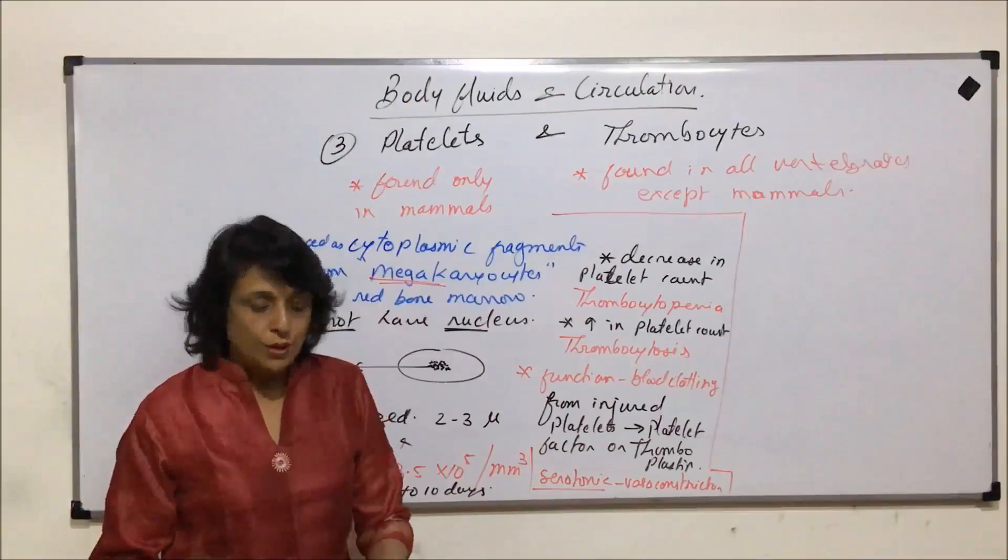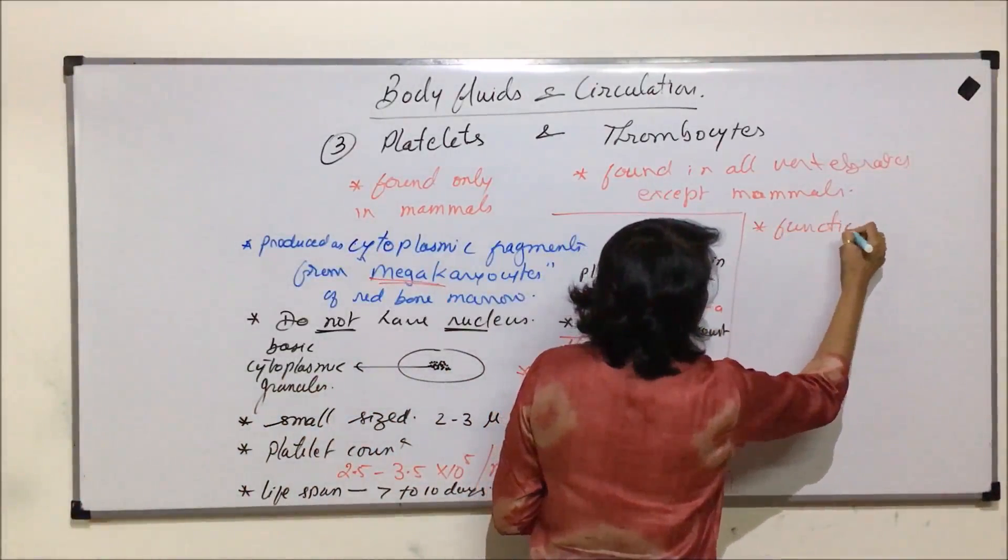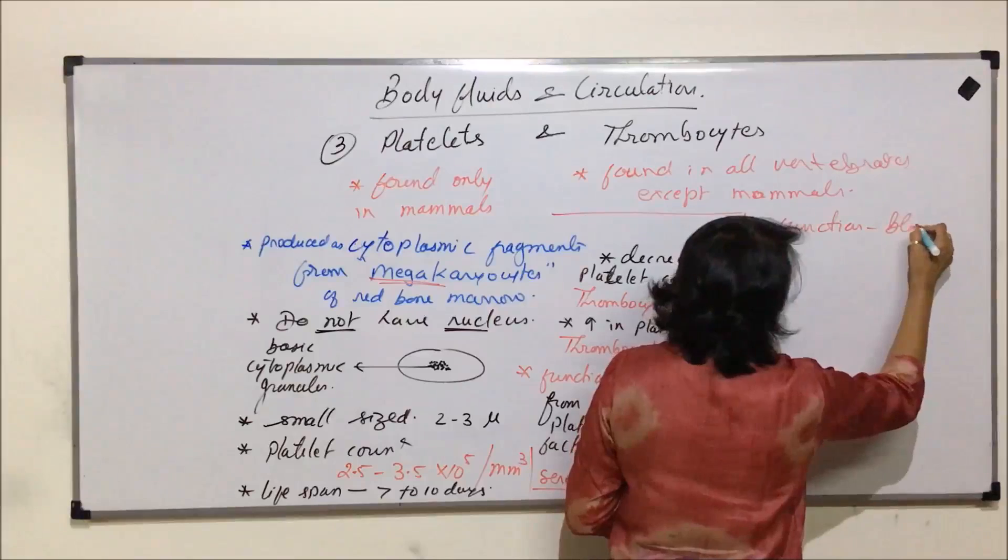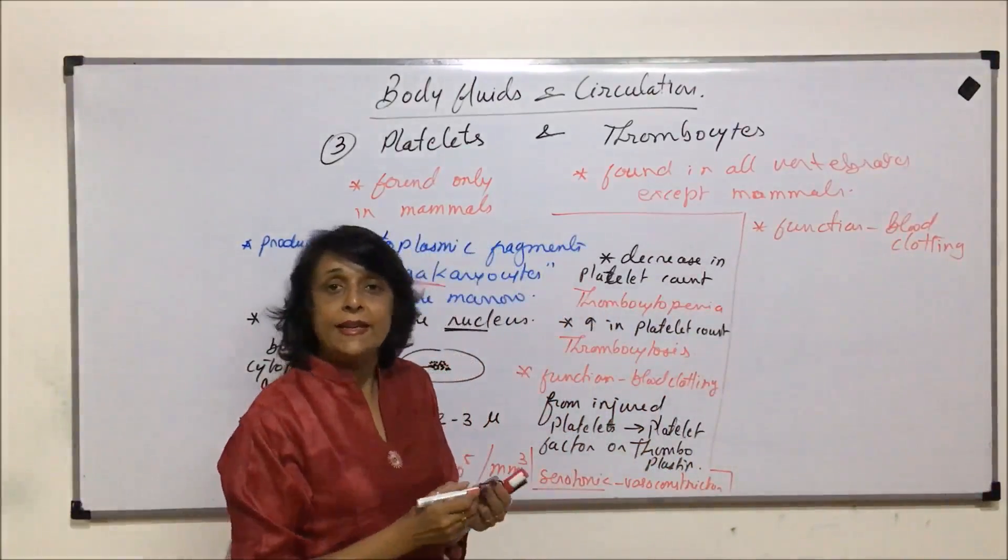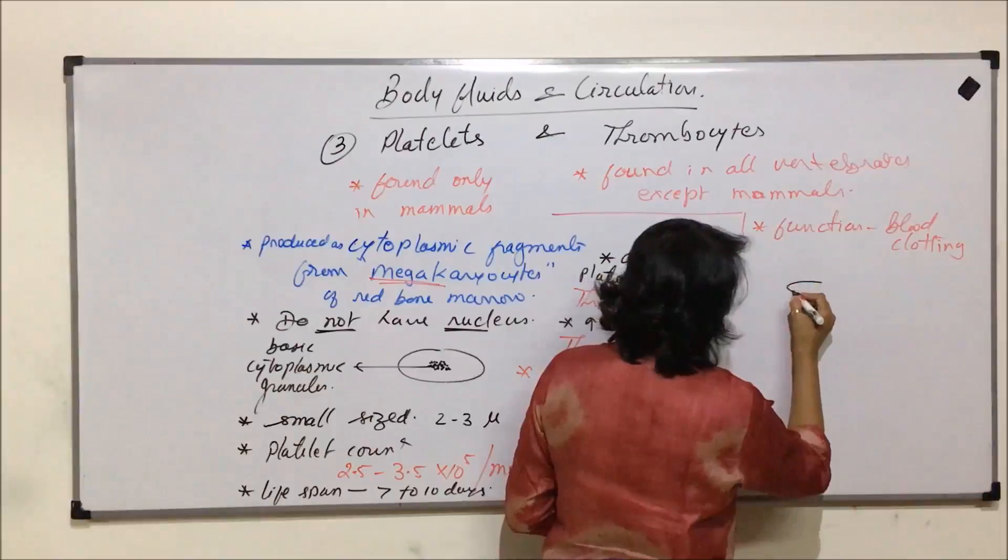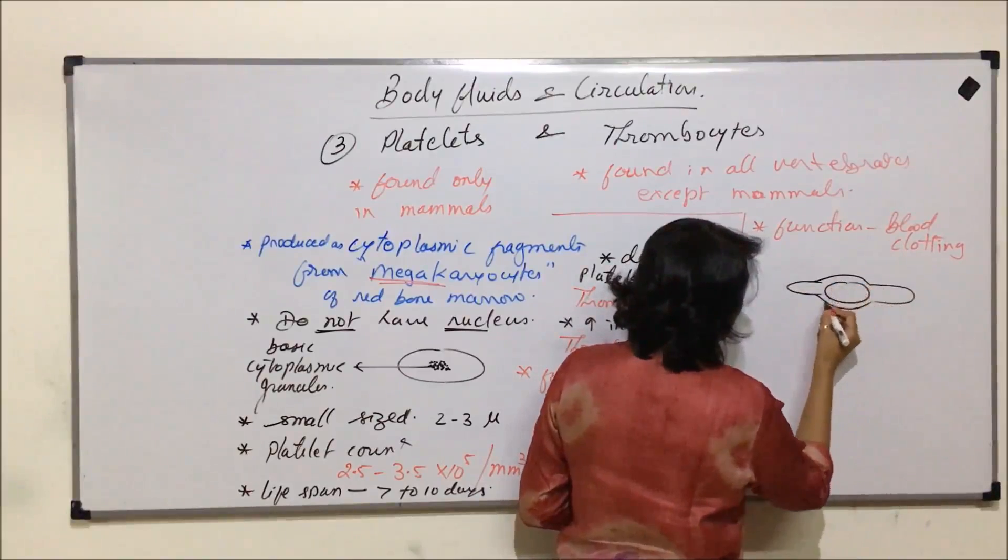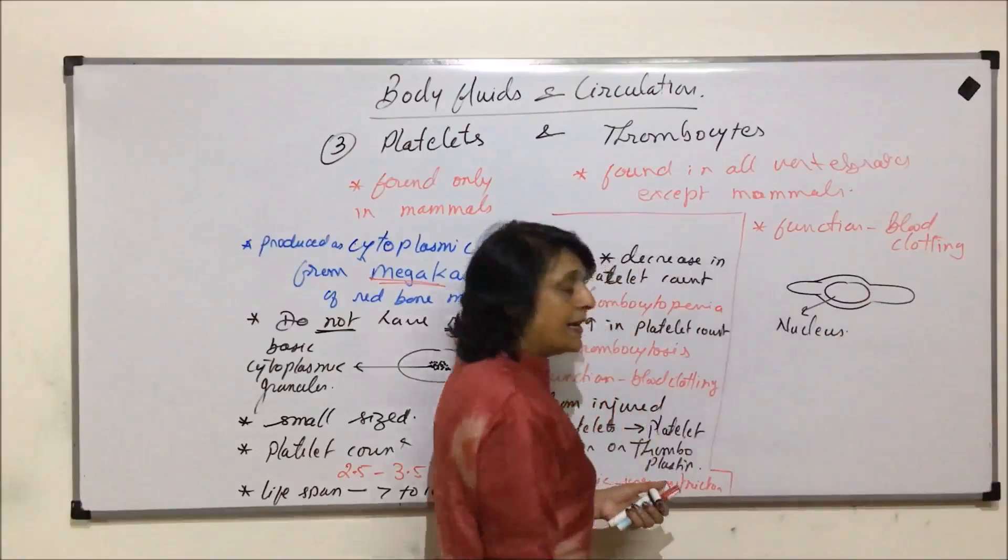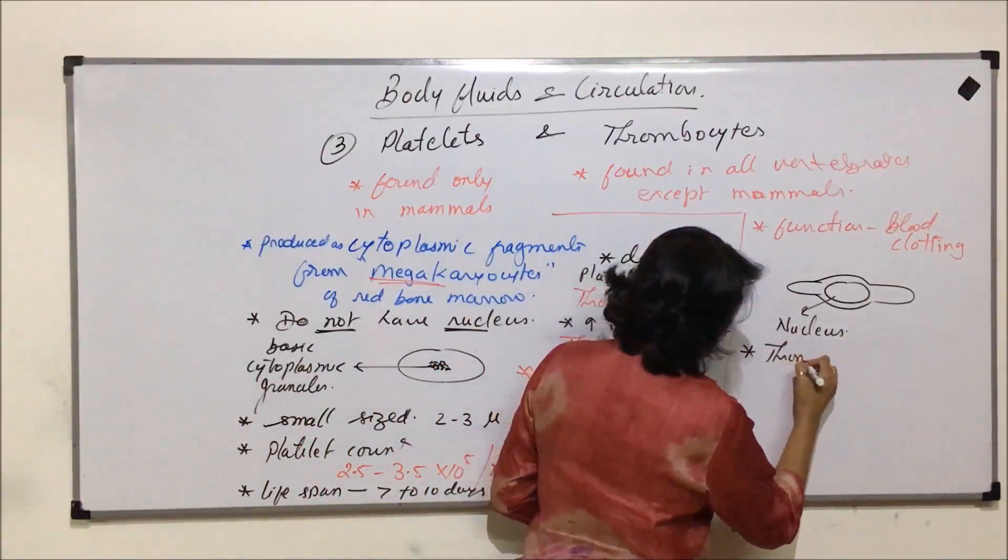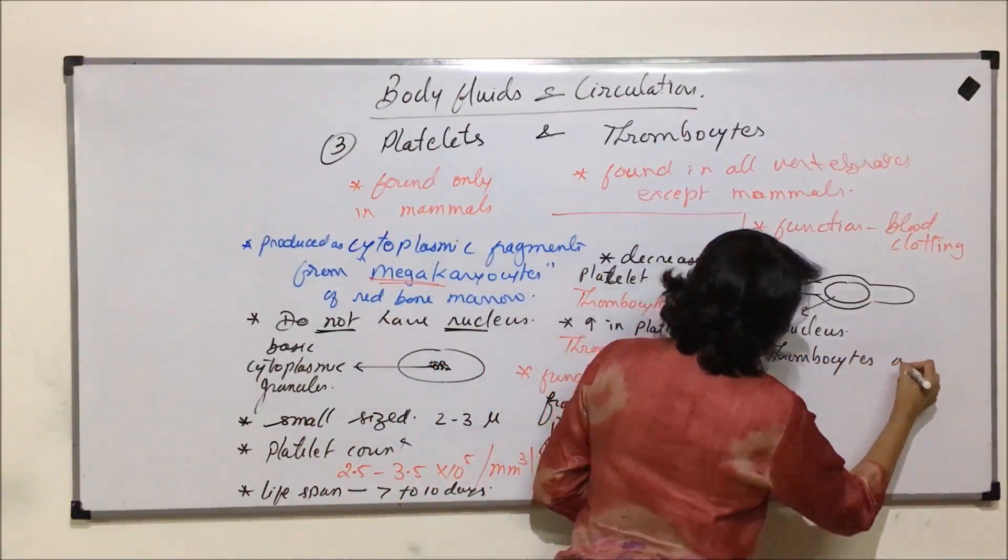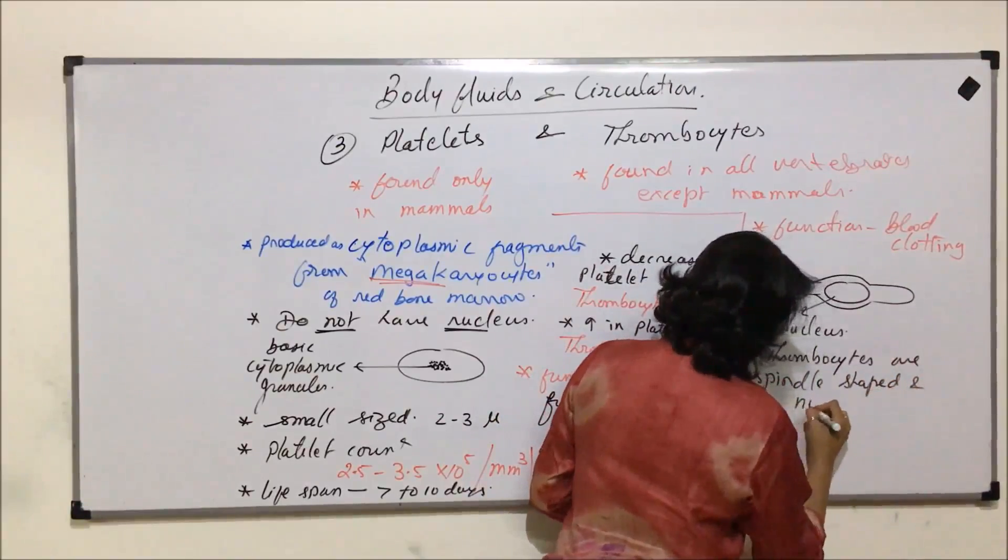Now when we come to thrombocytes, they also help in blood clotting. So function is same. But they are nucleated and the shape is spindle-like. The middle part is swollen because of the nucleus. So here there is a nucleus, and that is why the cells get spindle shape. So these thrombocytes are spindle-shaped and nucleated.